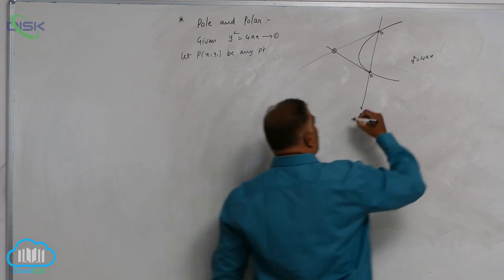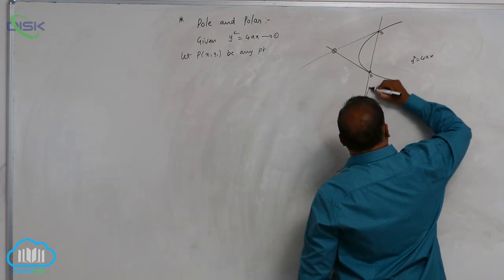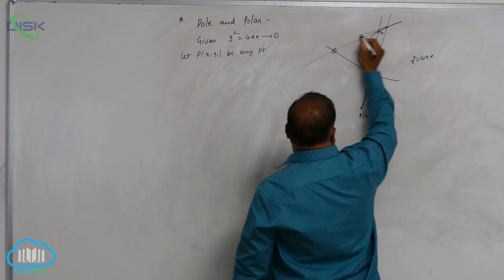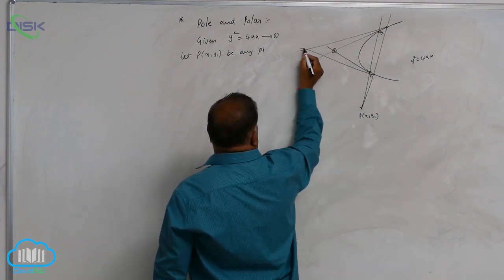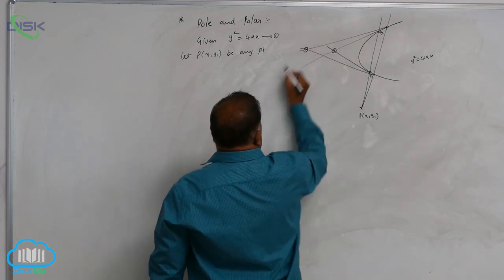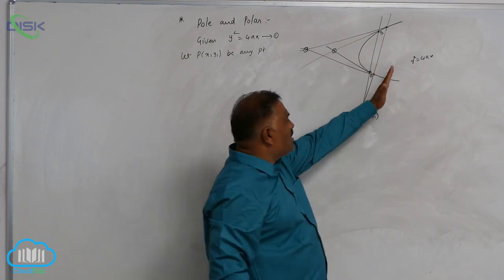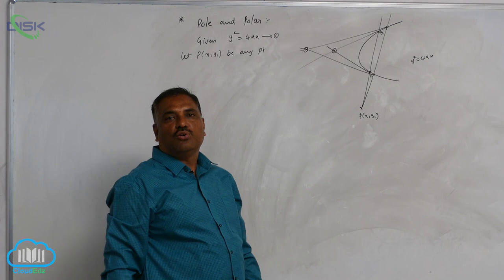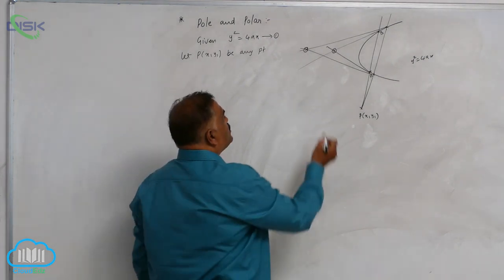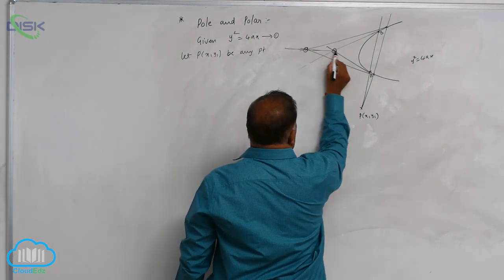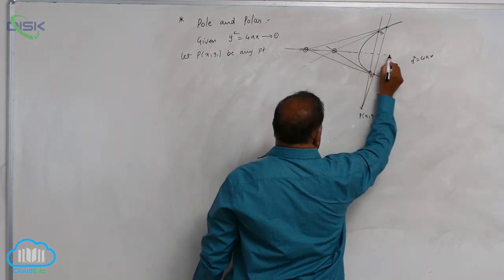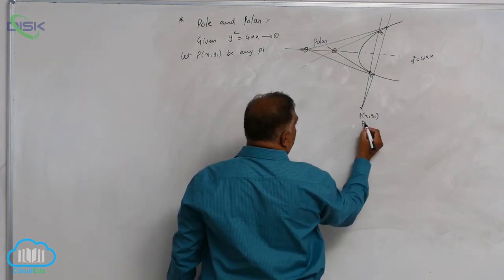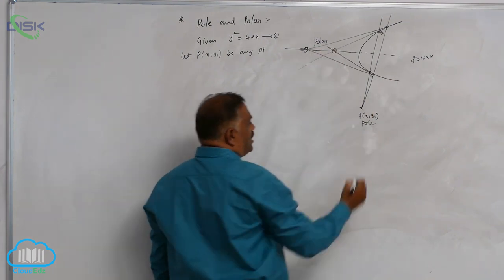If you draw one more secant line, two more points will come on the curve. You draw tangents at those points as well. As many chords as you draw, so many points of intersection you are going to get. The line joining all these intersection points is called the polar, and this particular fixed point P is called the pole.